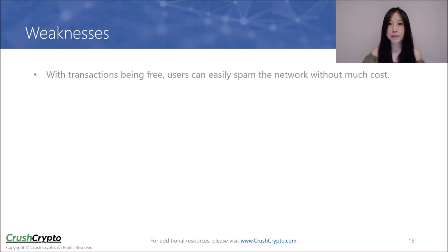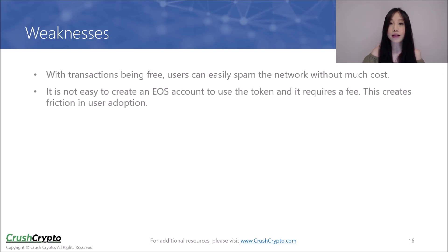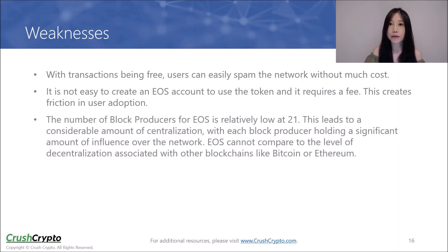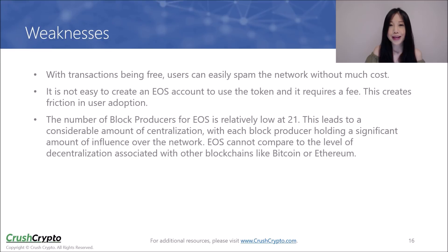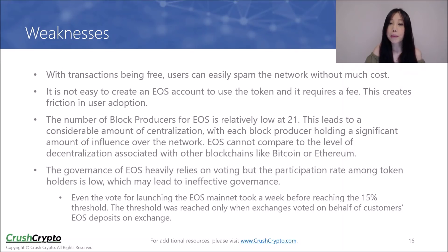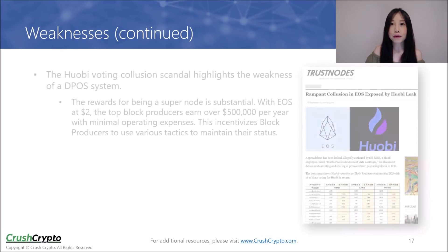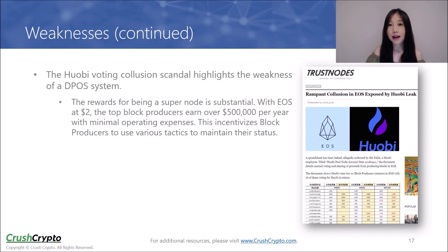In terms of weaknesses, with transactions being free, users can easily spam the network with minimal costs. It is not easy to create an EOS account to use the token, and it requires a fee, which could have a negative impact on user adoption. The number of block producers for EOS is relatively low at 21, meaning there is a considerable amount of centralization, with each block producer holding significant influence over the network — EOS cannot compare to the level of decentralization of Bitcoin or Ethereum. The governance of EOS relies heavily on voting, but with low participation at the moment, this may lead to ineffective governance. The Huobi voting collusion scandal highlights the weakness of a DPoS system, and a lot of thought must be put into the selection of supernodes and the incentive mechanism.